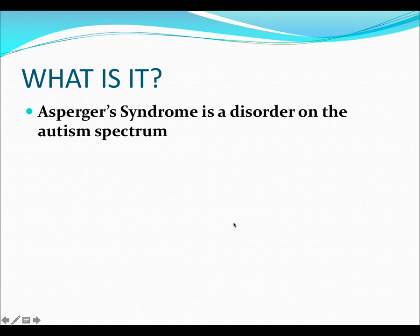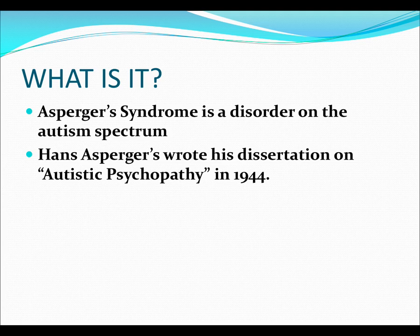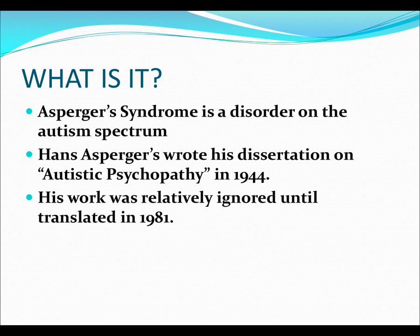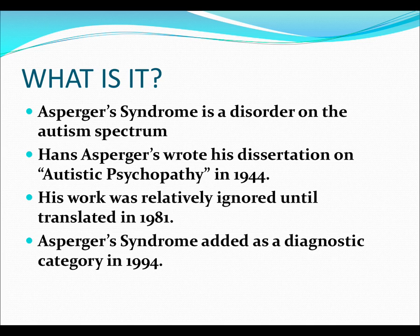What it is is a disorder that is on the autism spectrum. Autism is a spectrum, so not every autistic person is the same — there's a whole spectrum of ways that autism manifests itself. A gentleman named Hans Asperger wrote about this in 'Autistic Psychopathy' in 1944, so this is an older disorder. Unfortunately it was relatively ignored until 1981, and it wasn't even until 1994 that it made the DSM — the book that psychologists and psychiatrists use to classify psychiatric and intellectual disorders.